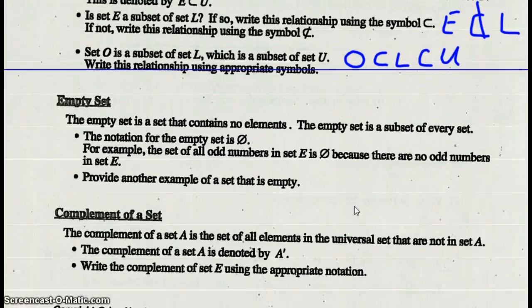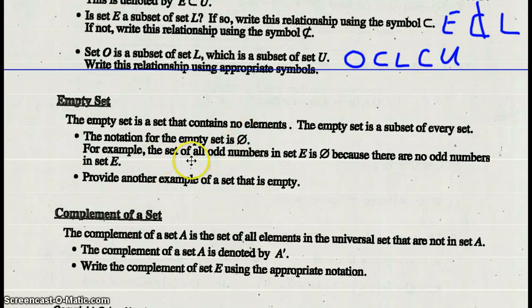Empty set is a set that contains no elements. The empty set is a subset of every set. The notation for empty set is a zero with a line through it. For example, the set of all odd numbers in set E. There are no odd numbers in set E if you look above.